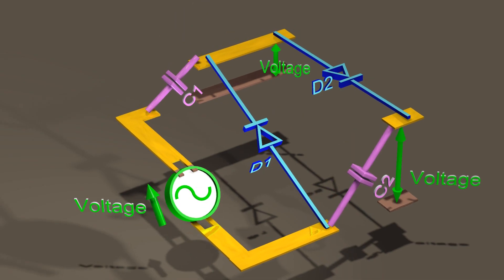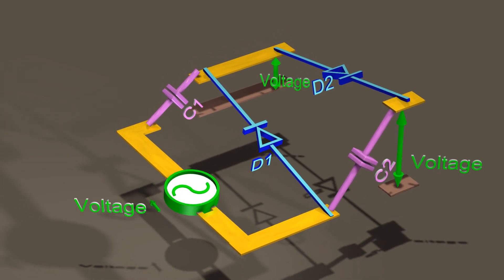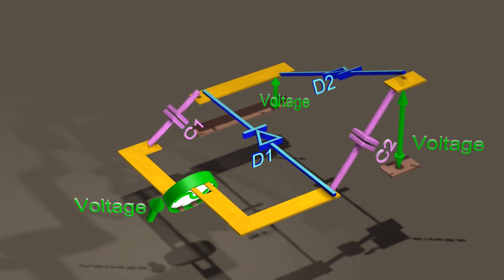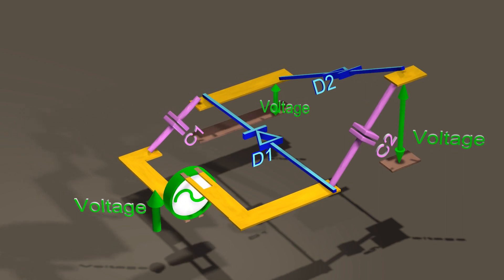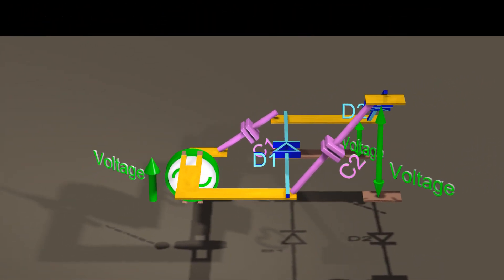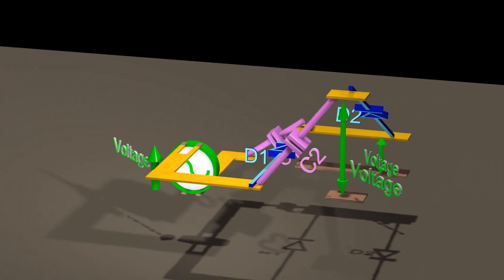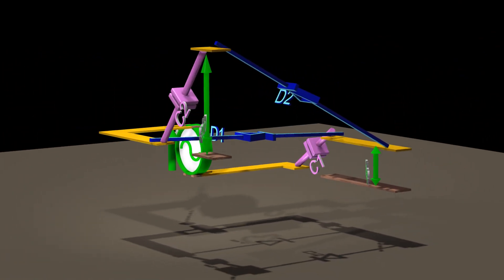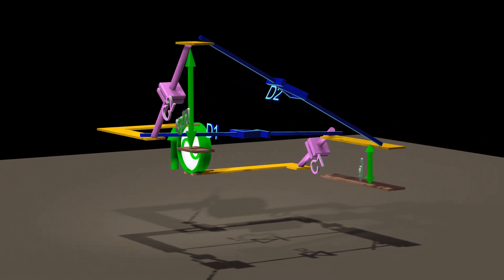Diode 2 will prevent capacitor 2 from discharging. After we repeat this cycle a number of times, we will eventually arrive at a situation where the DC output voltage is double the peak value of the AC input voltage.